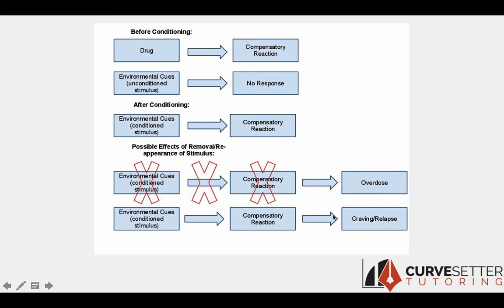This conditioning also underlies craving and relapse. If an individual is sober and goes back to the old place where they used to take the drug, or sees stimuli associated with the drug — such as a needle, spoon, or pipe — that environmental cue triggers the compensatory reaction in their body and cognitively triggers craving and potentially even relapse. The individual may try to cope with the discomforting compensatory reaction by relapsing, or simply experience craving because the environmental cues signal the drug.